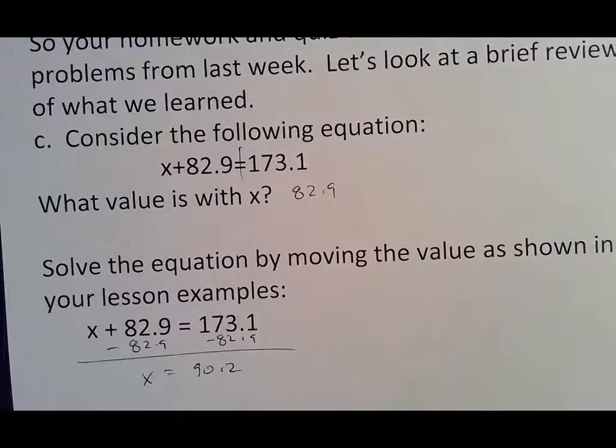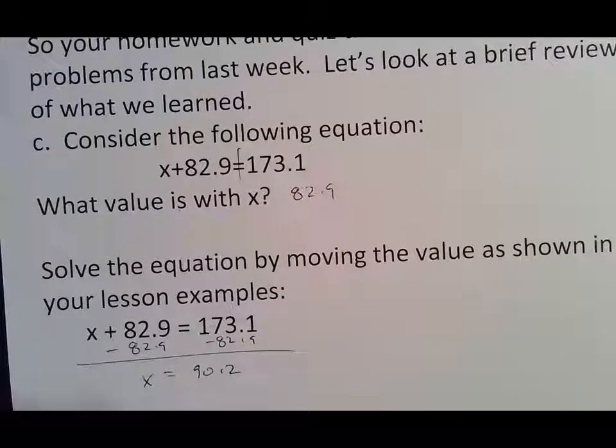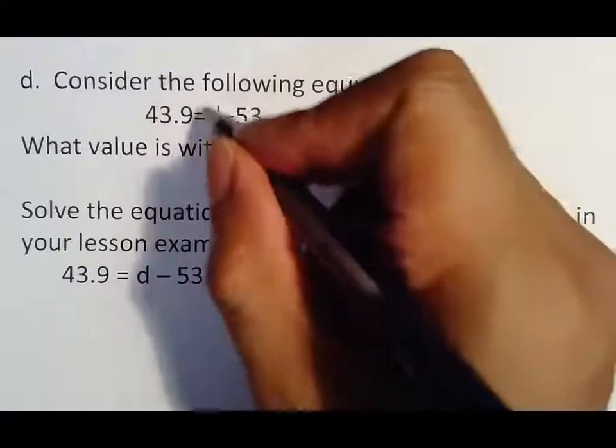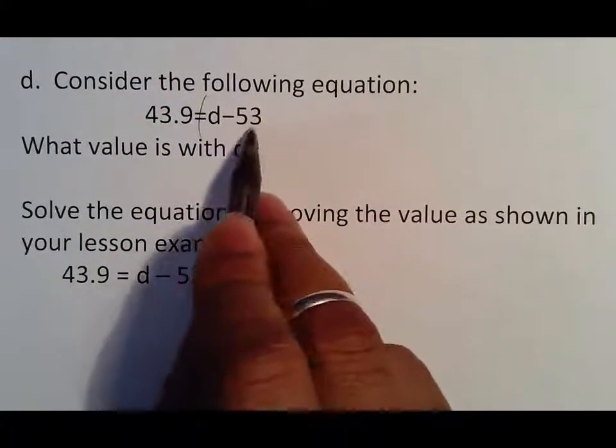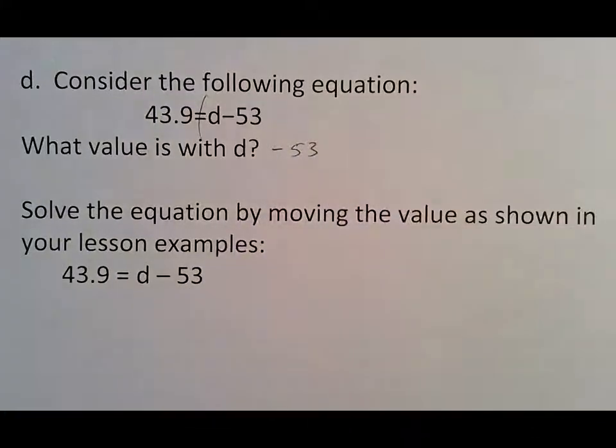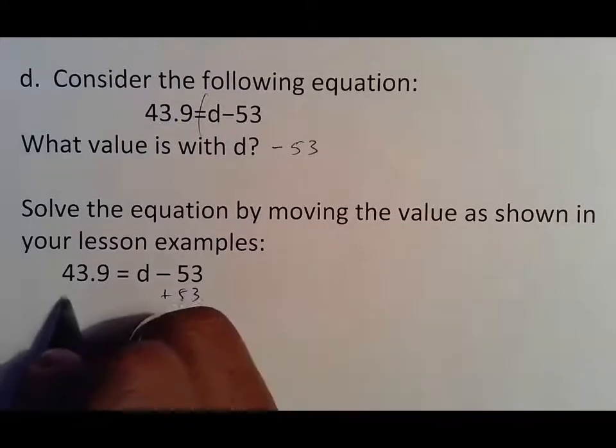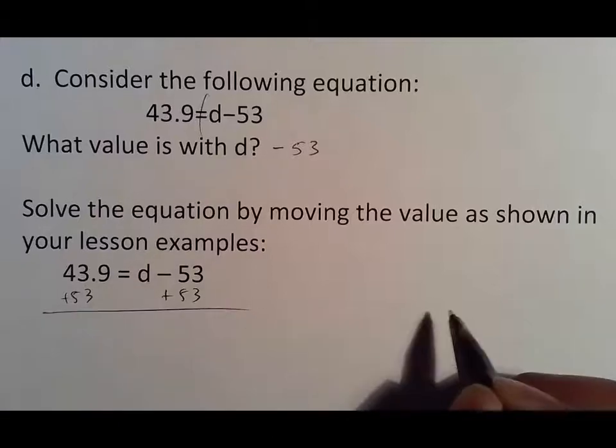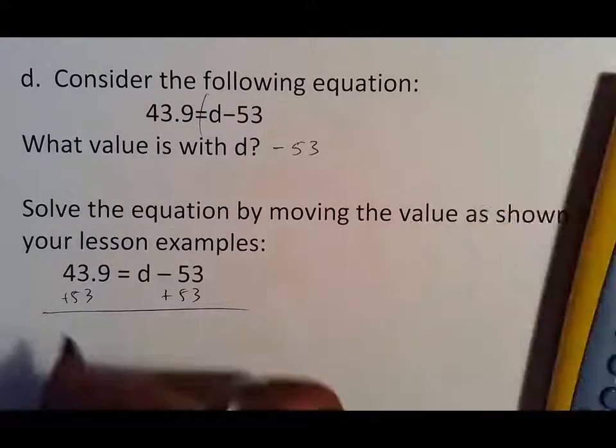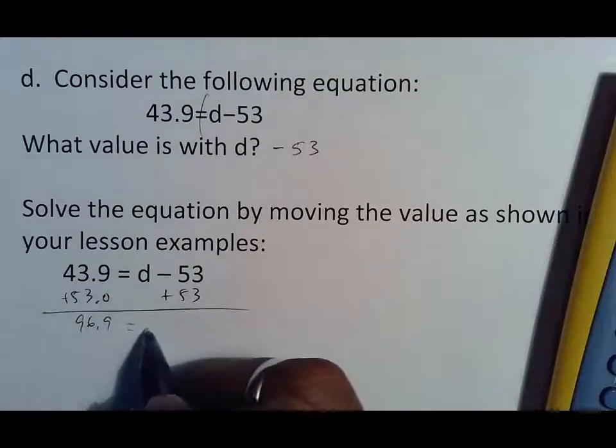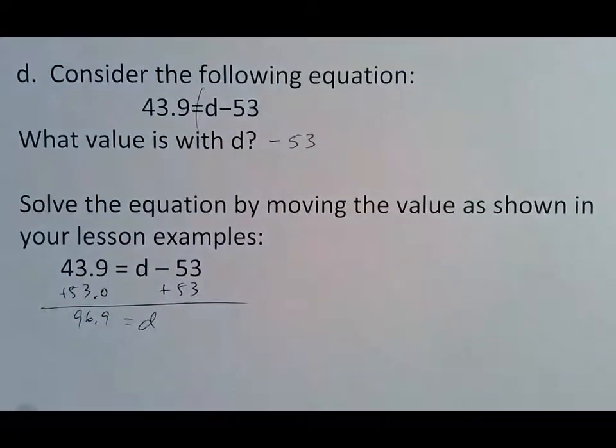There's your four boxes. It'll be the same thing as what we did before. And then one more before we get ready to go to our work. Same thing. The only difference is it's on the other side. If you have a negative, you must put that negative with that number when they ask what's with it. How do you move a minus 53? And that is by adding 53. I think we can add this up. That's 9, 6, and 9. So 96.9 equals D, and that would be it.